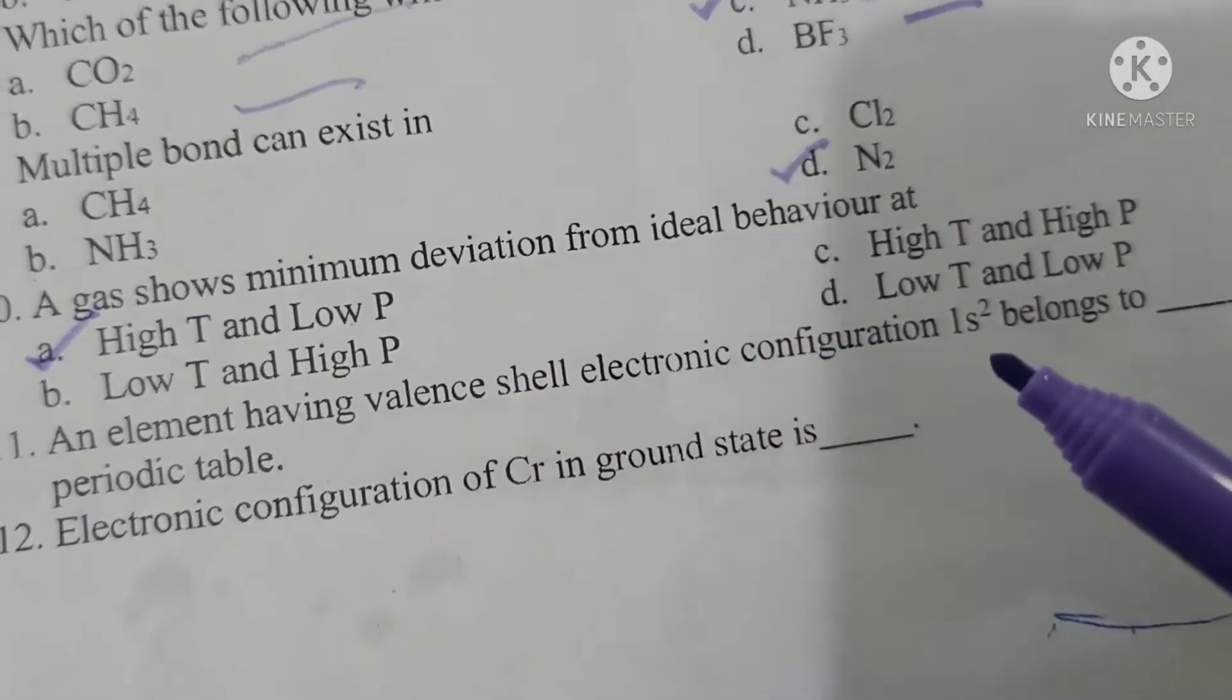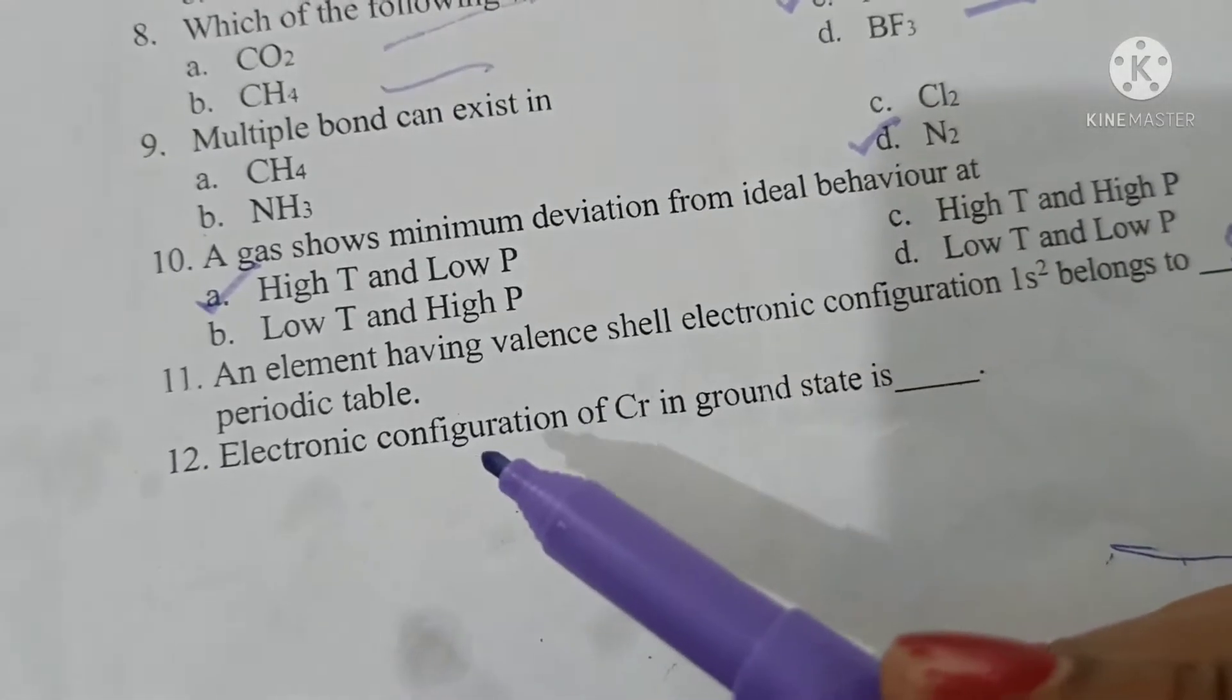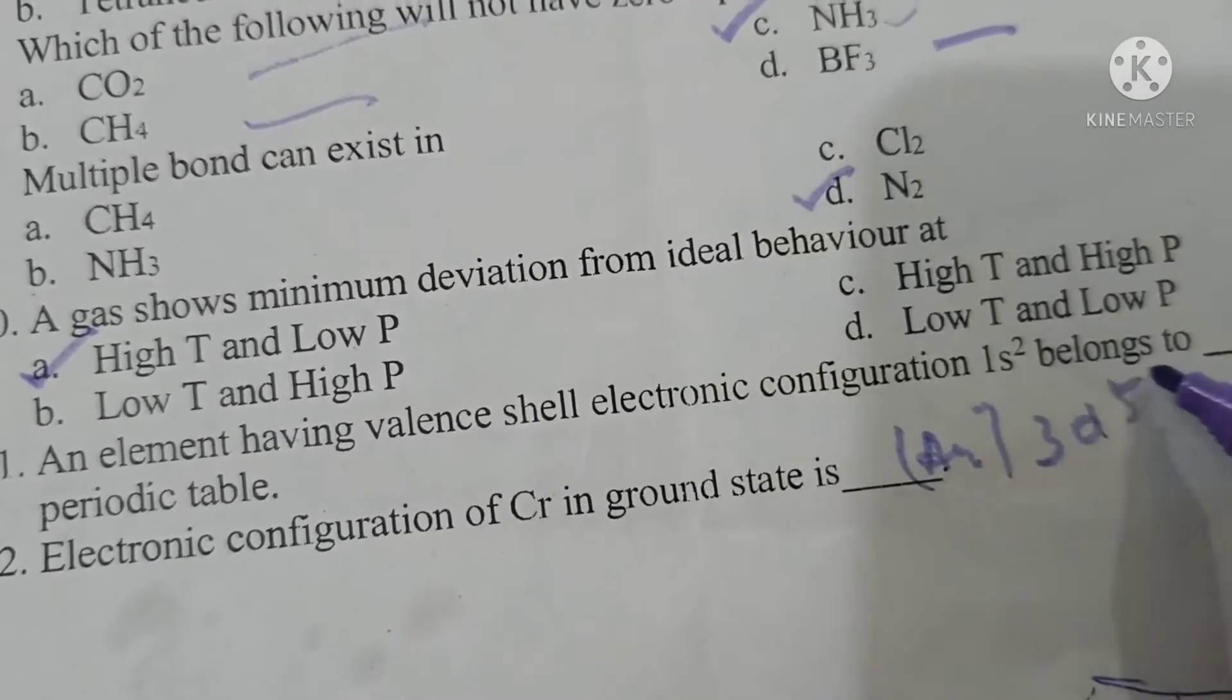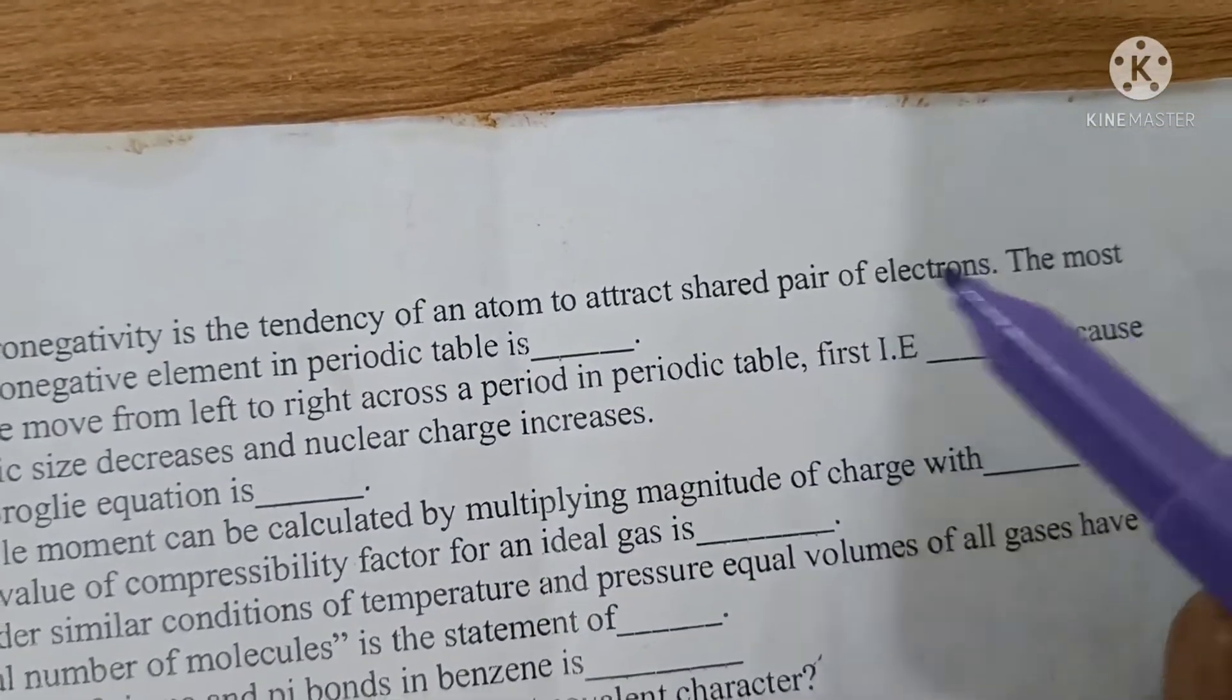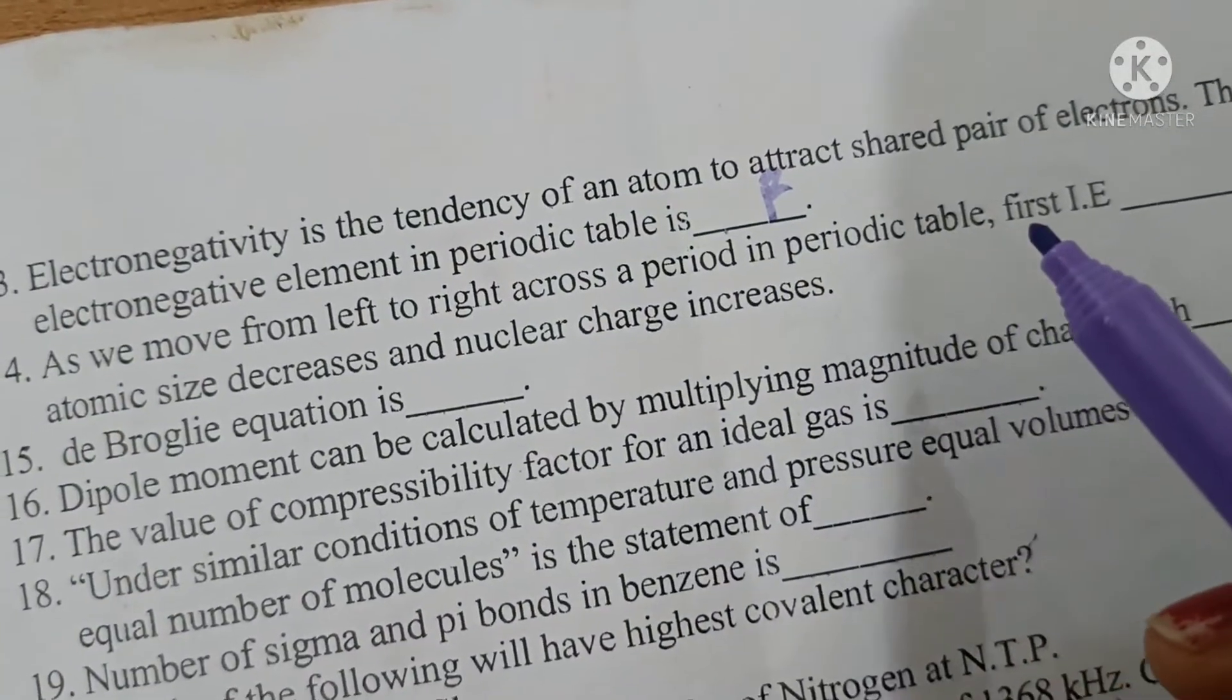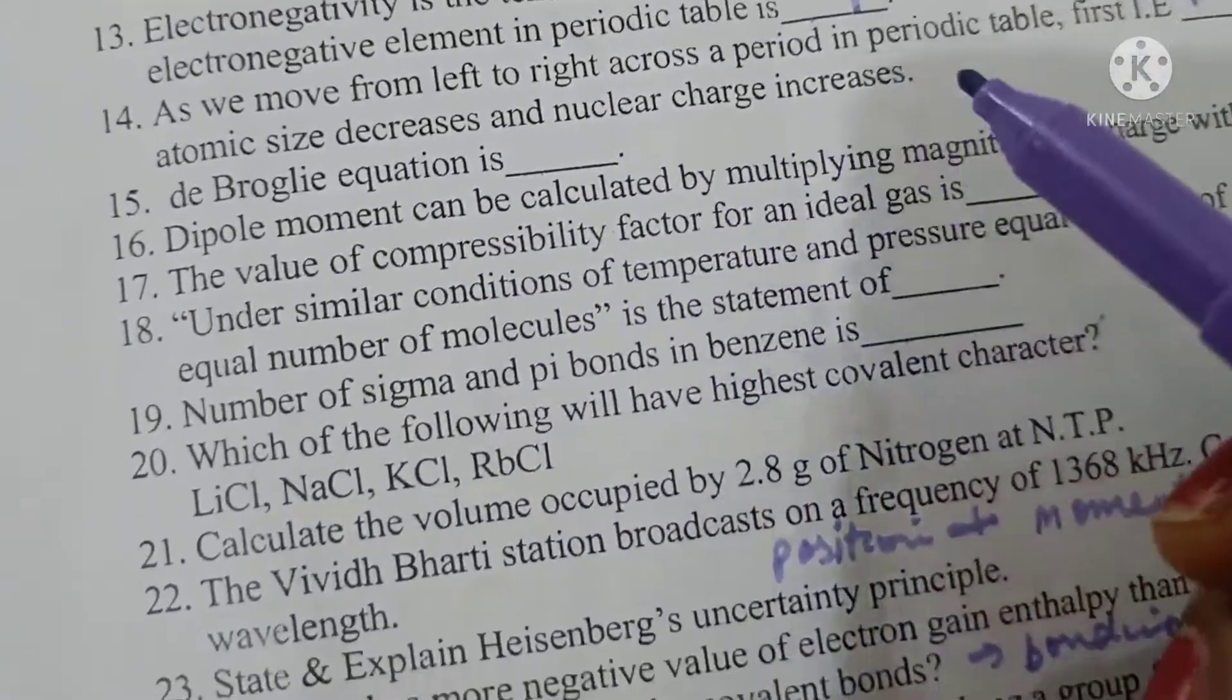An element having valence shell electronic configuration 1s2 belongs to S block element as the last electron enters the S subshell. Electronic configuration of chromium in ground state is argon 18, 3d5 and 4s1. Electronegativity is the tendency of an atom to attract shared pair of electrons. The most electronegative element in the periodic table is fluorine. As we move from left to right across a period, the first ionization enthalpy value increases because atomic size decreases and nuclear charge increases.